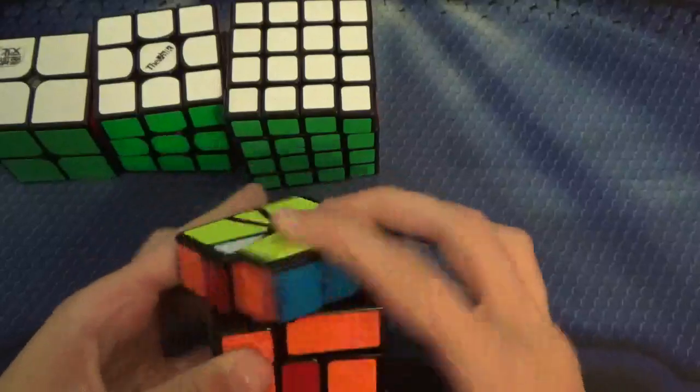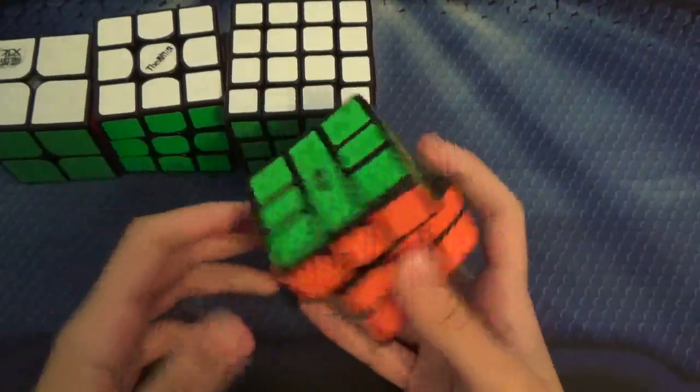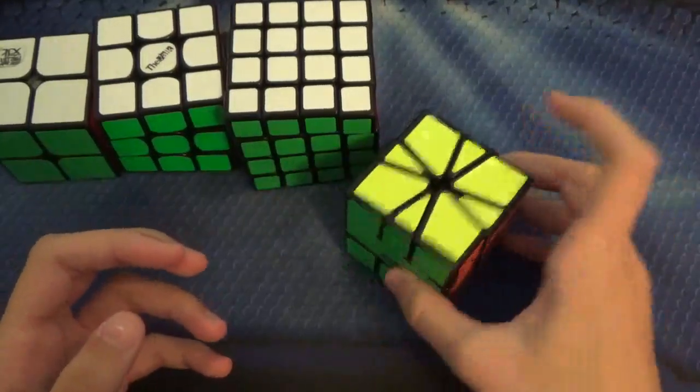For Square-1, this is the Chi Square-1. Hopefully I'll be able to do good in Square-1 this time. Just a sub 25 average and a sub 20 single.